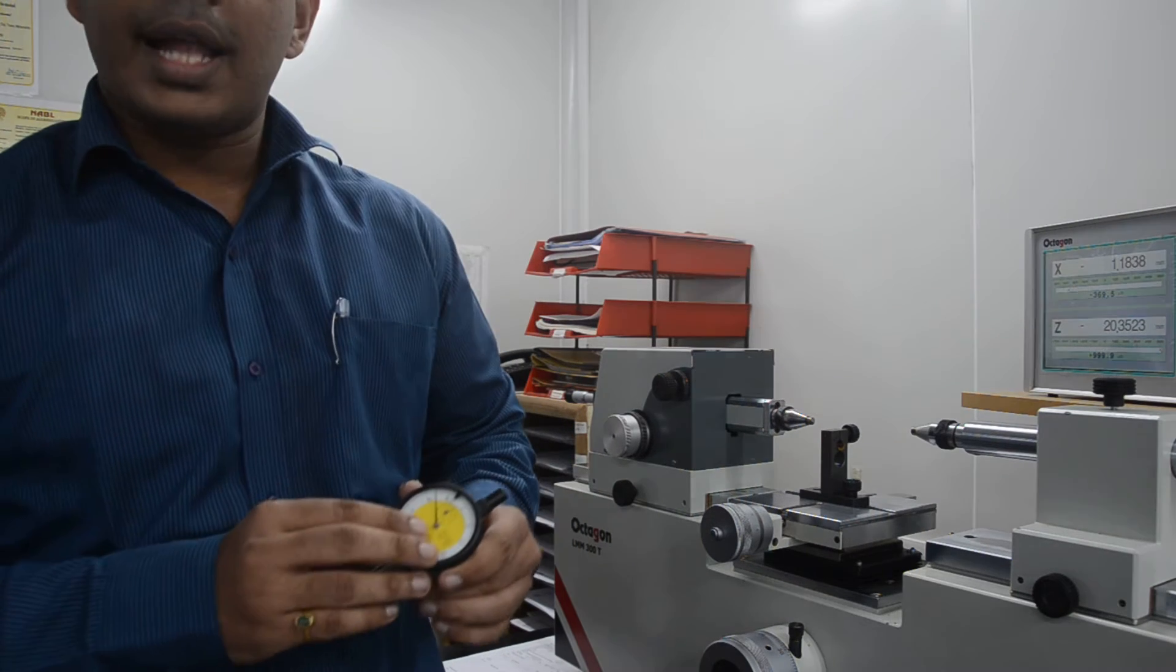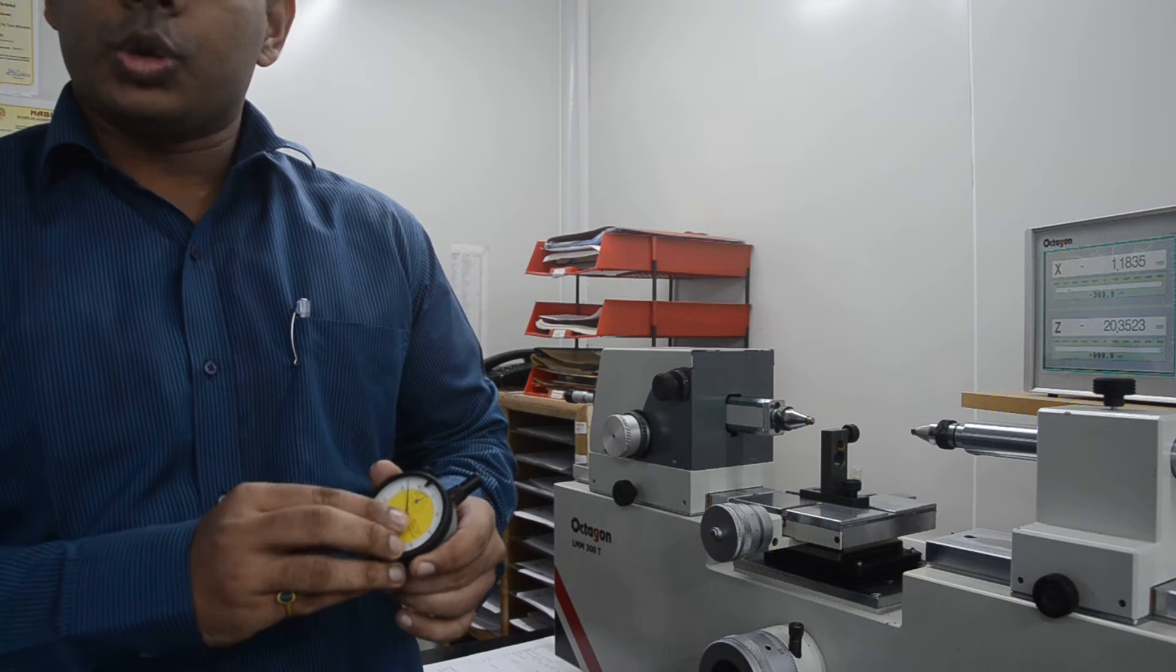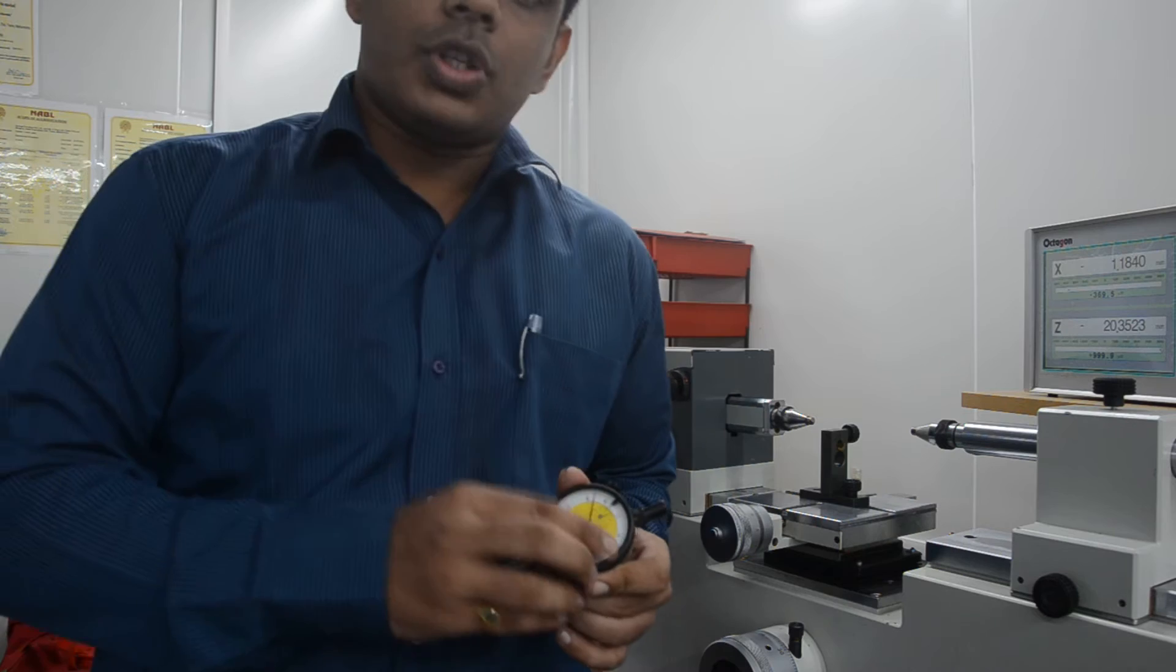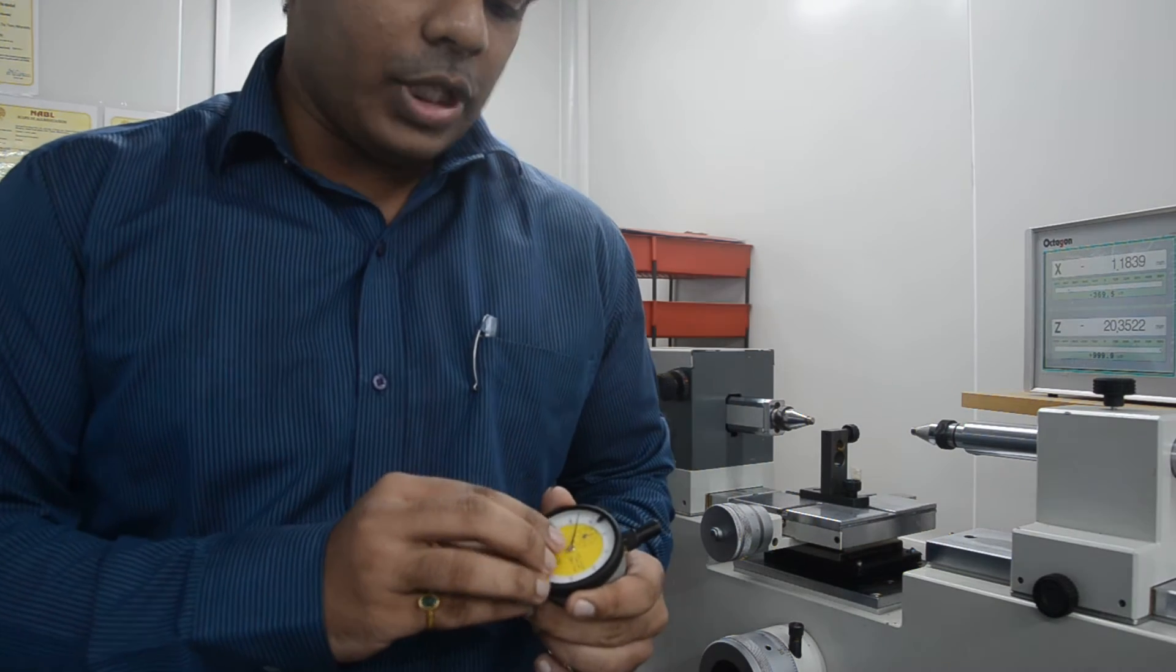This is basically a plunger dial gauge. It has a range of 0-10 mm and a least count of 0.01 mm.